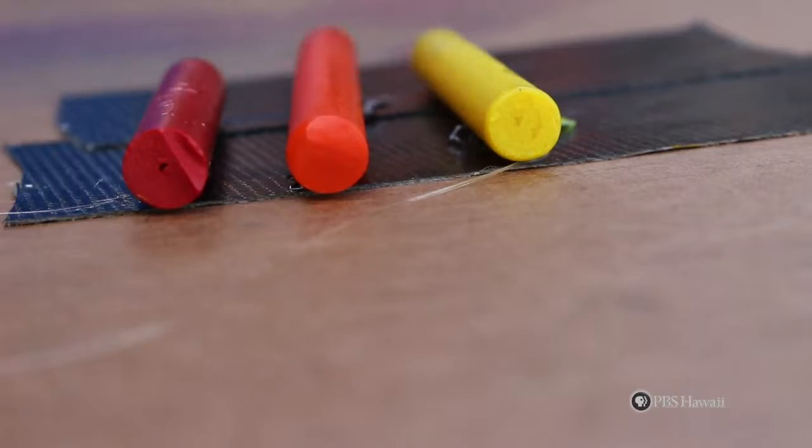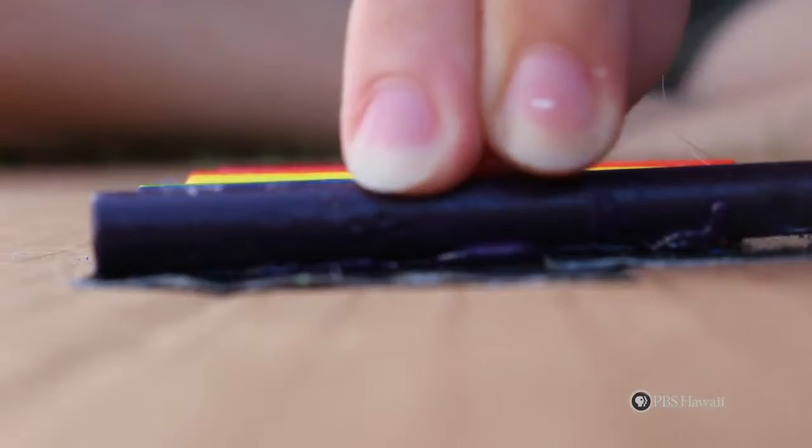Then, hot glue the crayons onto the canvas. If the crayons don't stick at first, wait until the glue is dry and try again.